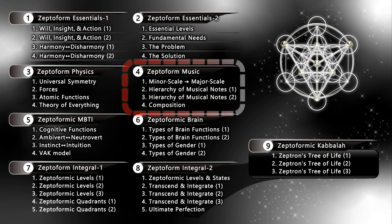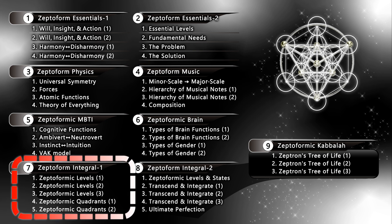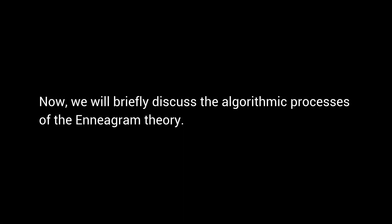In module 4, the algorithmic processes are used to compose music. In module 7, they are used to predict the developmental process of humans as well as society. Now, we will briefly discuss the algorithmic processes of the Enneagram theory.